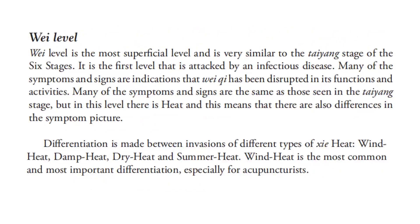The wei level is the most superficial level and is very similar to the taiyang stage of the six stages. It is the first level attacked by an infectious disease. Many of the symptoms and signs indicate that wei qi has been disrupted. Many symptoms are the same as those seen in the taiyang stage, but in this level there is heat, which creates differences in the symptom picture. Differentiation is made between invasion of wind heat, damp heat, dry heat, and summer heat. Wind heat is the most common and most important differentiation, especially for acupuncturists.